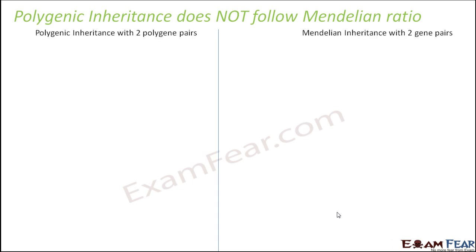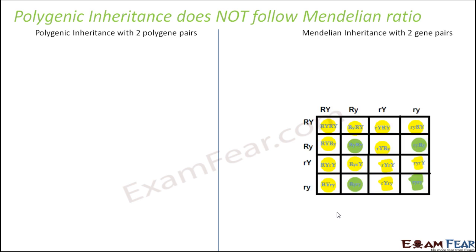Let us first consider Mendelian inheritance with two gene pairs. In both cases, we will take an example where two gene pairs are involved. For Mendelian inheritance with two gene pairs, let us take the example of the cross Mendel performed in the second part of his experiment, where he took round and yellow seeds. That is, he crossed RRYY — round yellow seeds — with green wrinkled seeds.